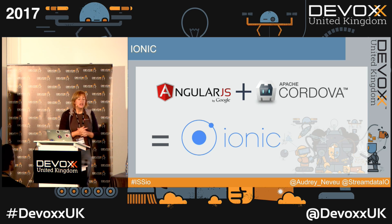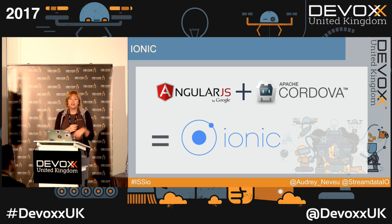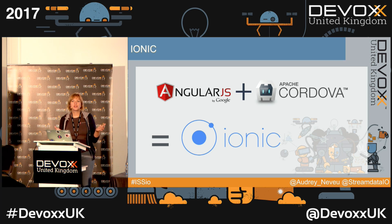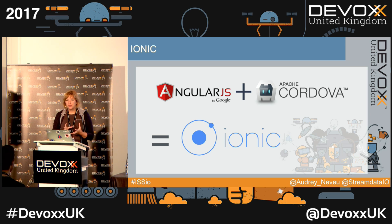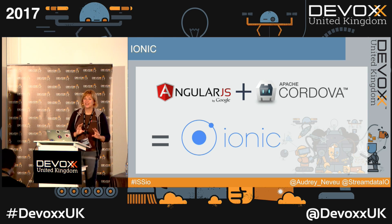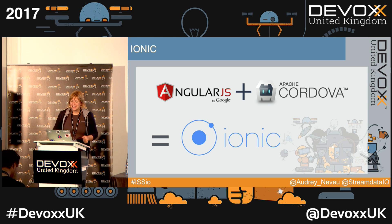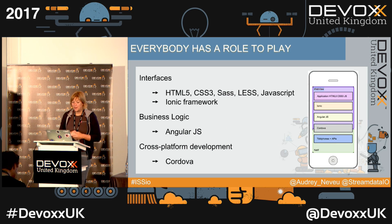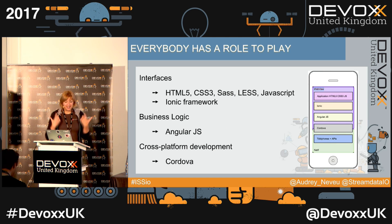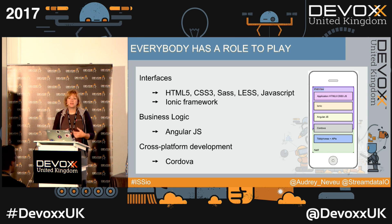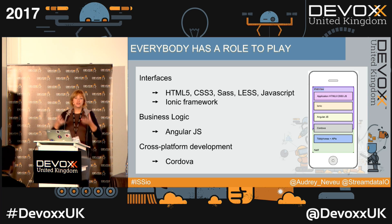Ionic is based on both AngularJS and Apache Cordova. In this session I'm going to use AngularJS, even if a new version — Ionic 3 — was released last week, which is based on Angular. But at the moment, Angular does not really play as well with services and events; you have to make some kind of hacks. Ionic applications are hybrid mobile applications, meaning they are based on a web view — basically a browser bundled into a native application.